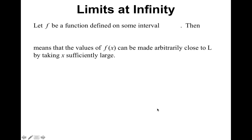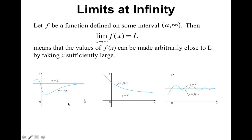We're going to let f be a function defined on some interval from some number a to positive infinity. Then we can say that the limit as x approaches infinity of f of x equals L means that the values of f of x can be made arbitrarily close to L by taking x sufficiently large. Here are a couple of graphs showing this: there is a horizontal asymptote, and as x gets very, very large on the positive side, the graph gets really close to the horizontal asymptote y equals L — either approaching from below or from above.